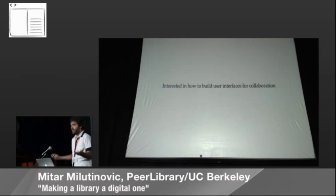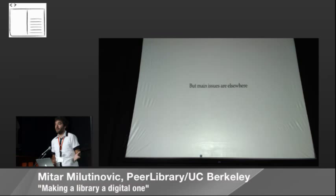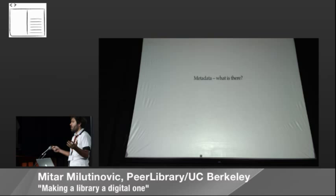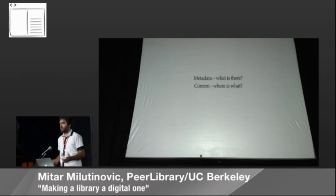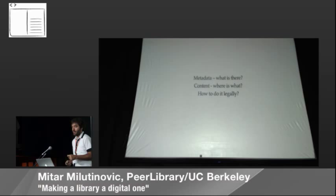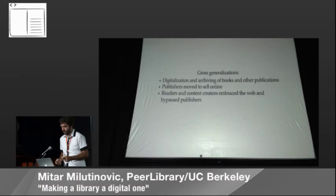When I started this project, it seemed easy — I know computer science, I know how to program. But the main issues were not there. The main issues were: where is the metadata, where do I know what exists — which books, publications, academic papers are there? Where is content I could integrate into my system so people could interact with it? And how to do this legally, in a way that publishers and users would like?